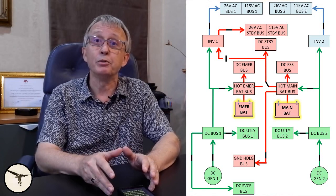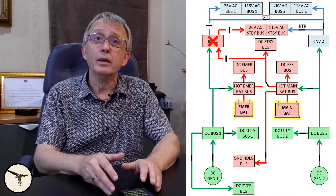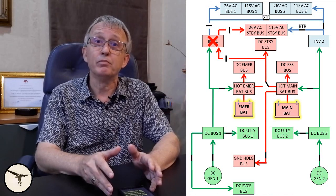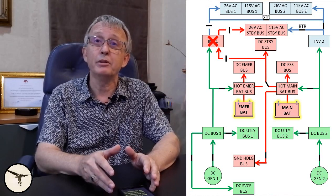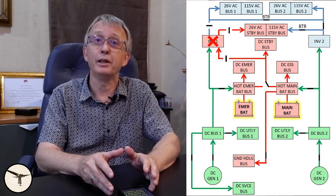As mentioned earlier, inverter 1 also supplies the AC standby bus. In case of an inverter failure, an automatic bus tie relay, BTR, ensures that one inverter can supply all AC bus bars.